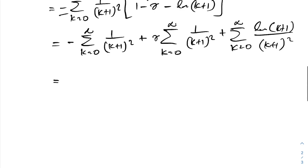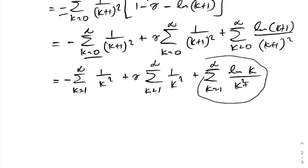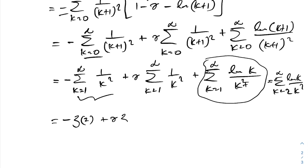Shifting the index to begin from k equals 1, these sums become: sum from k equals 1 to infinity of 1 over k squared, which is zeta of 2, and sum from k equals 1 to infinity of natural log of k over k squared. Since natural log of 1 equals 0, the latter sum starts effectively from k equals 2. This is related to the derivative of the zeta function, as discussed in previous videos.